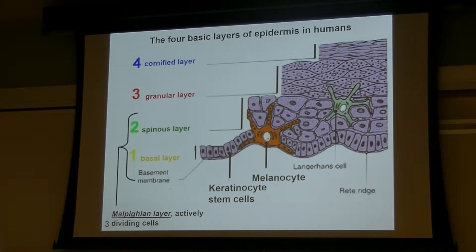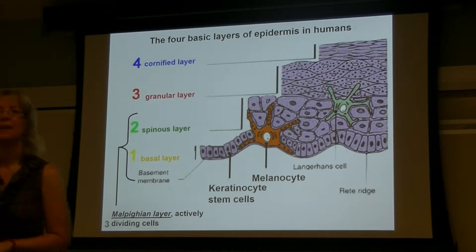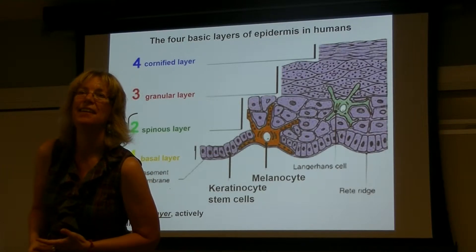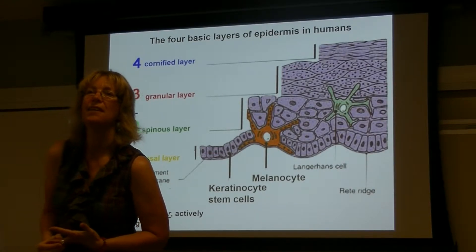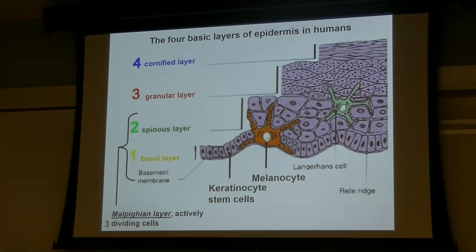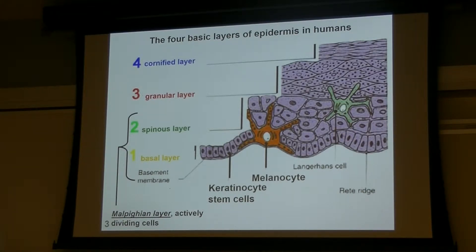Student question: Which layer does keratin start being made in? The keratin is already starting to be produced in the spinous layer. If you need me to repeat anything because of the noise outside, just let me know.